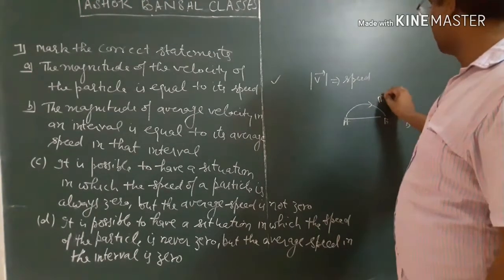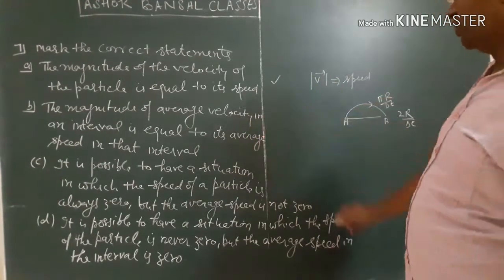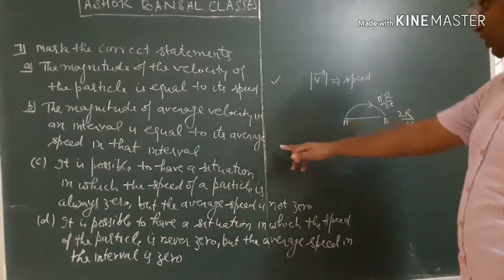The magnitude of the average velocity in an interval is equal to the average speed in that interval.